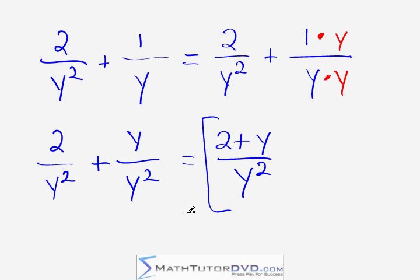Working with fractions that have variables in algebra is exactly the same as working with numbers. You just multiply by whatever you need to give the denominator the same value, then keep the denominator and add the numerators. Students sometimes think there are new rules in algebra because letters are everywhere, but the same exact rules apply from basic fraction math. That's why algebra is hard for students who don't have a solid foundation — but if you understand these basic rules, higher-level math is not difficult at all.